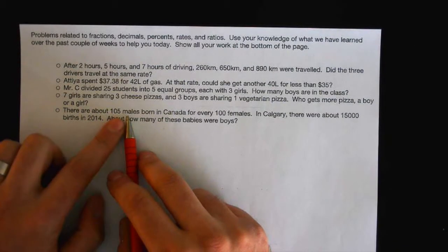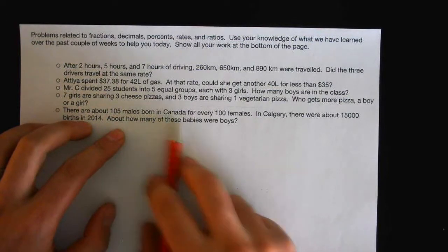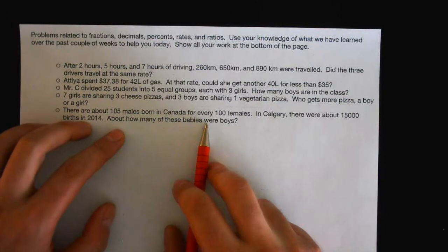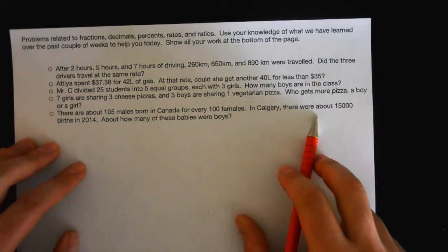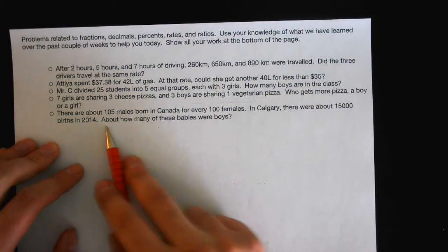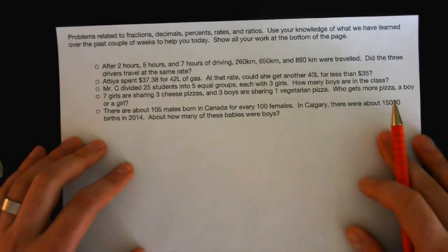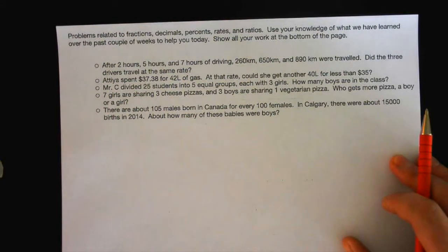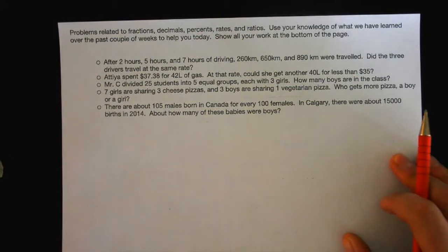There are about 105 males born in Canada for every 100 females. In Calgary, there were about 15,000 births in 2014. About how many of these babies were boys? So how would I do this? First of all, what is it asking me to figure out? This can be a ratio question. So what is the ratio here?